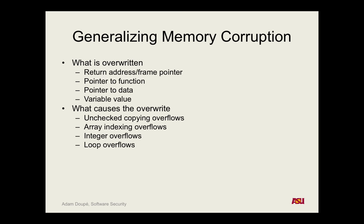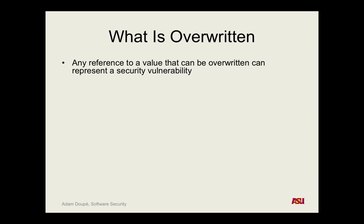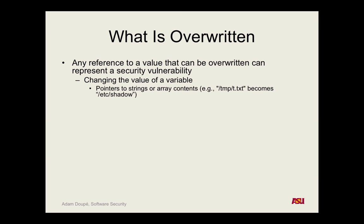There are all types of ways to cause overflows: copy functions, custom variables with array indexing, integer overflows, and loops. You can also change the buffer of a file pointer to point to a file name you want — for example, if it's a setuid program, you could change the value from /tmp/t.txt to /etc/shadow using your overflow.